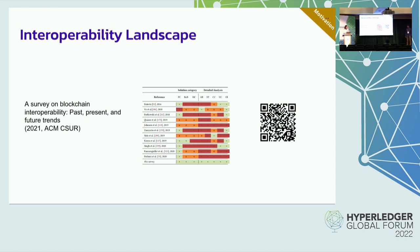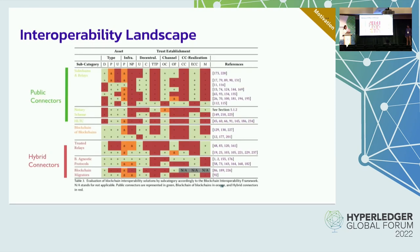We have done some work in the area. We have a survey published at ACM Computing Surveys where we try to make sense of the heterogeneity of the area. Basically we aggregate interoperability solutions into different categories based on a set of criteria. One important insight is that interoperability is not solely asset transfers — bridges are not the only use case. For example, Hyperledger Cactus and Weaver (now called Cacti) support more general types of interoperability, including cross-chain use cases beyond asset transfers.